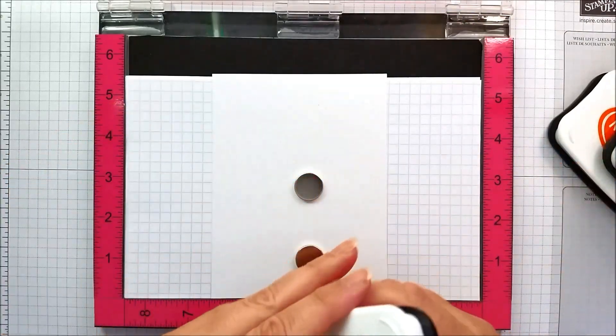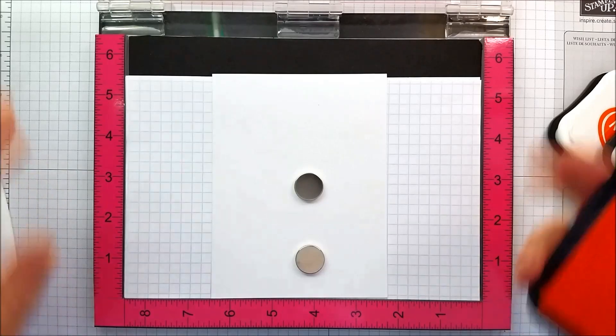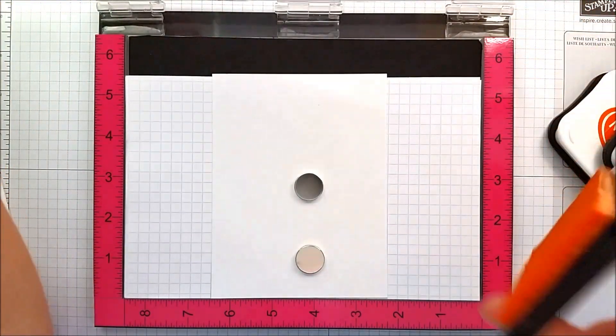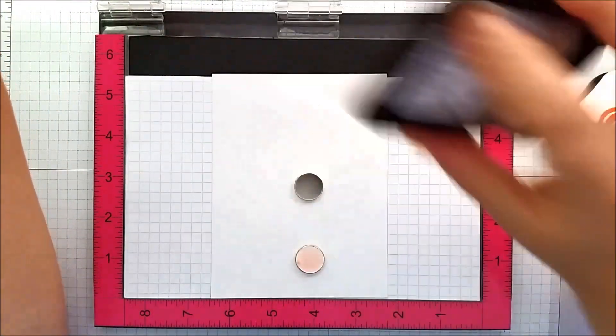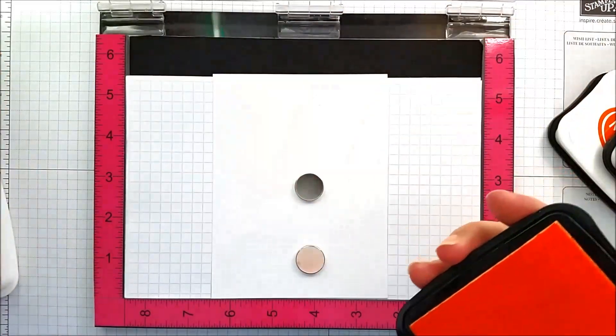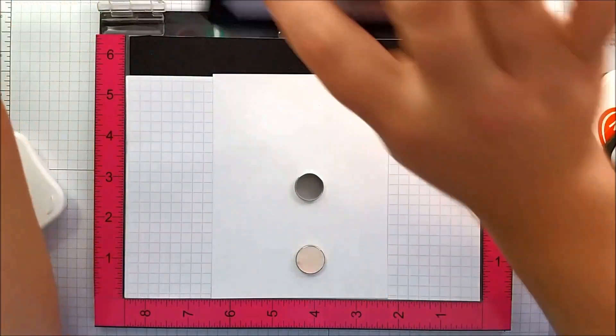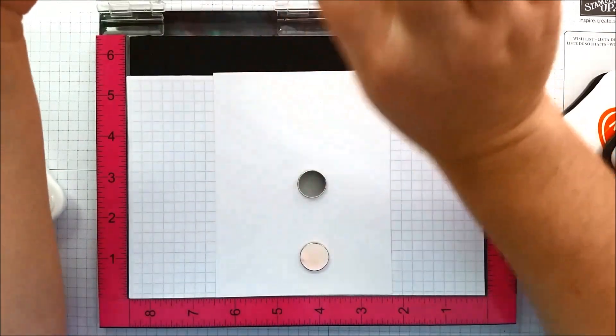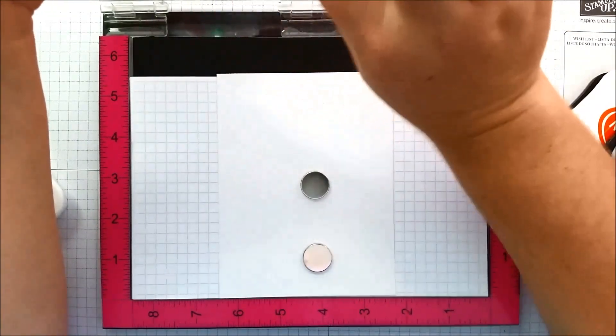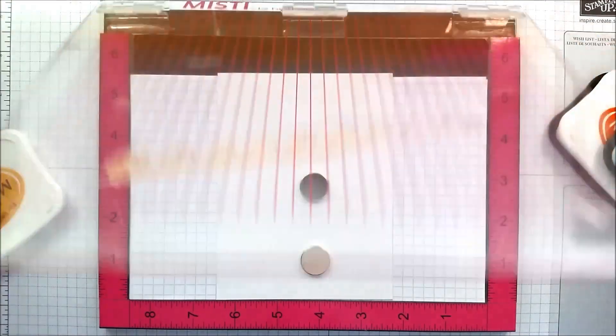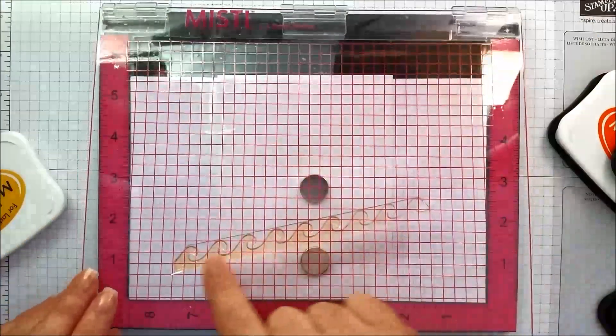I'm going to start with our lightest color. I'm actually going to apply my ink off screen just so you can see what I'm doing. I'm applying our lightest ink which is our cantaloupe color, and I'm actually going to start by inking up just this end of the stamp.